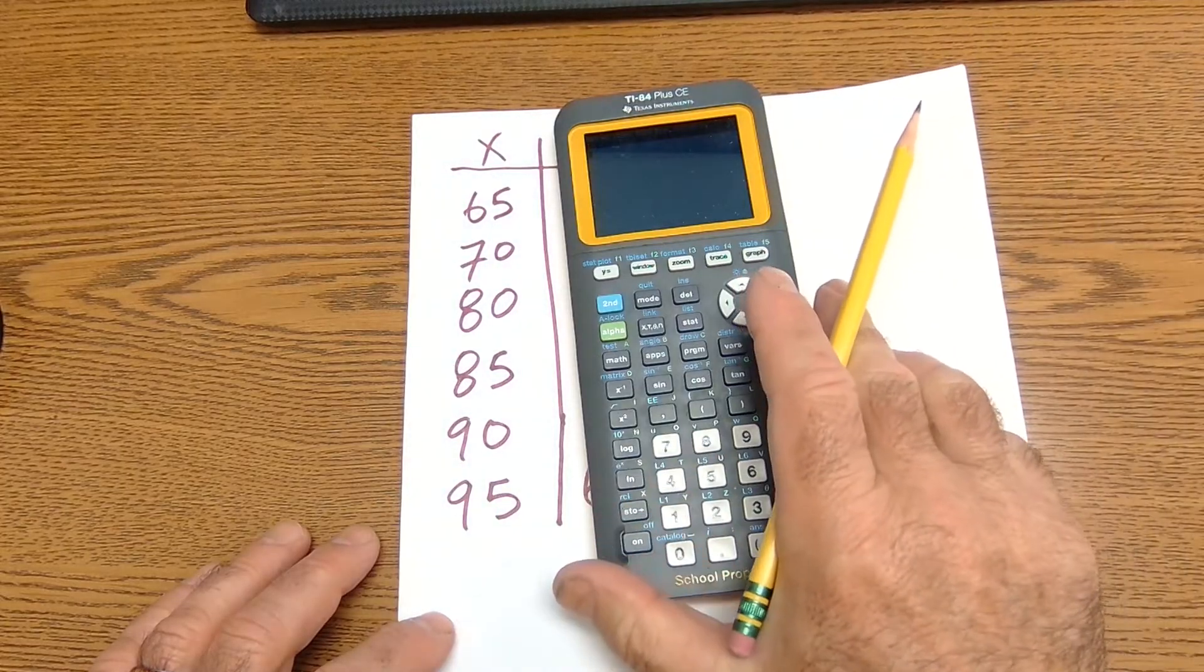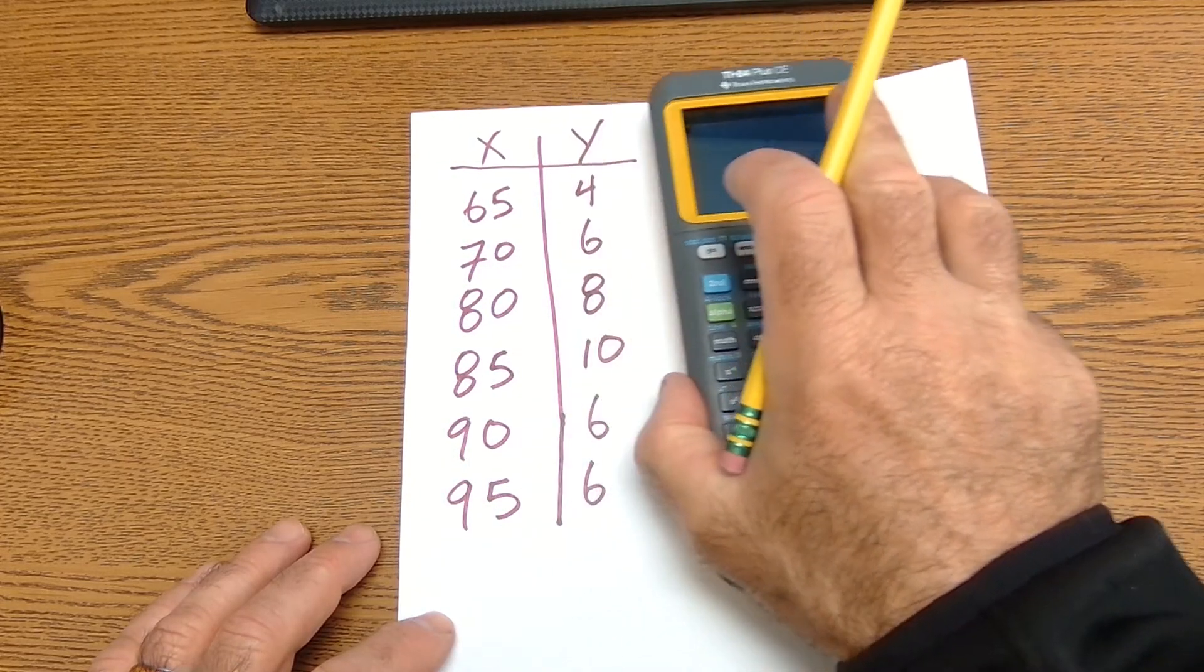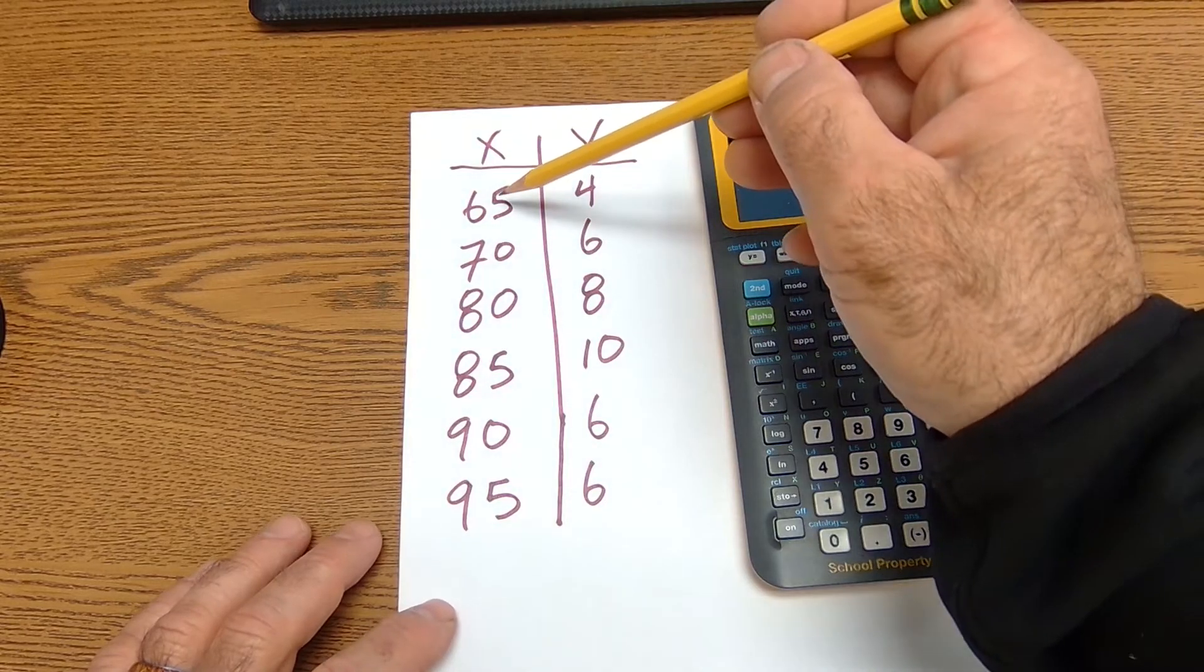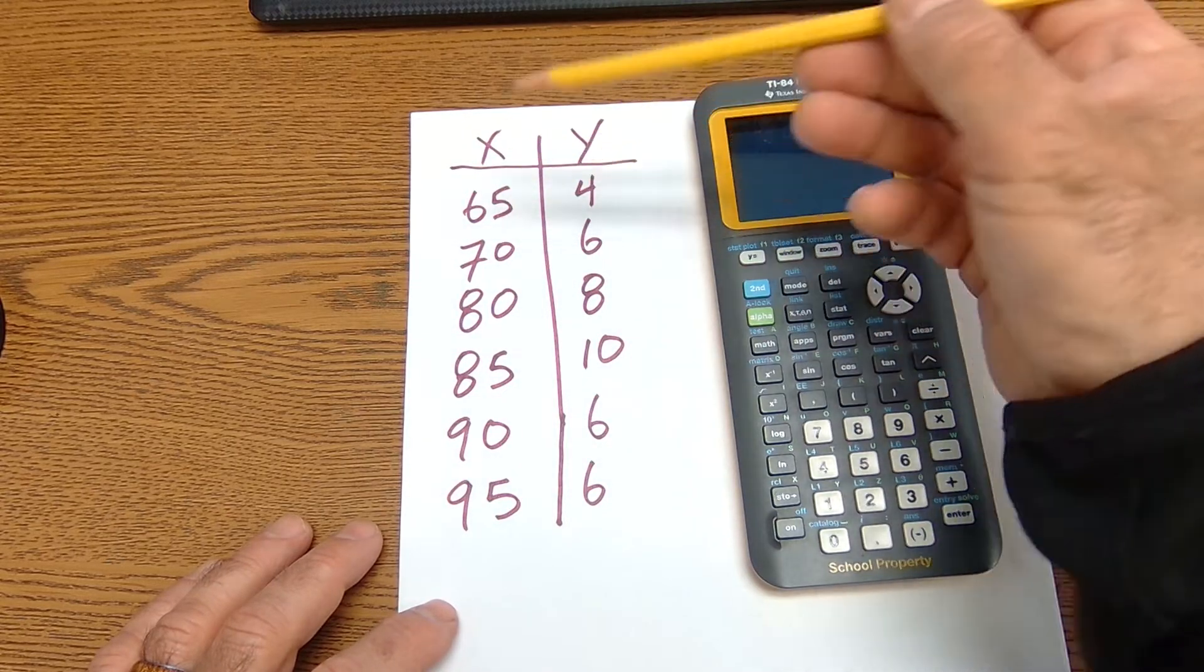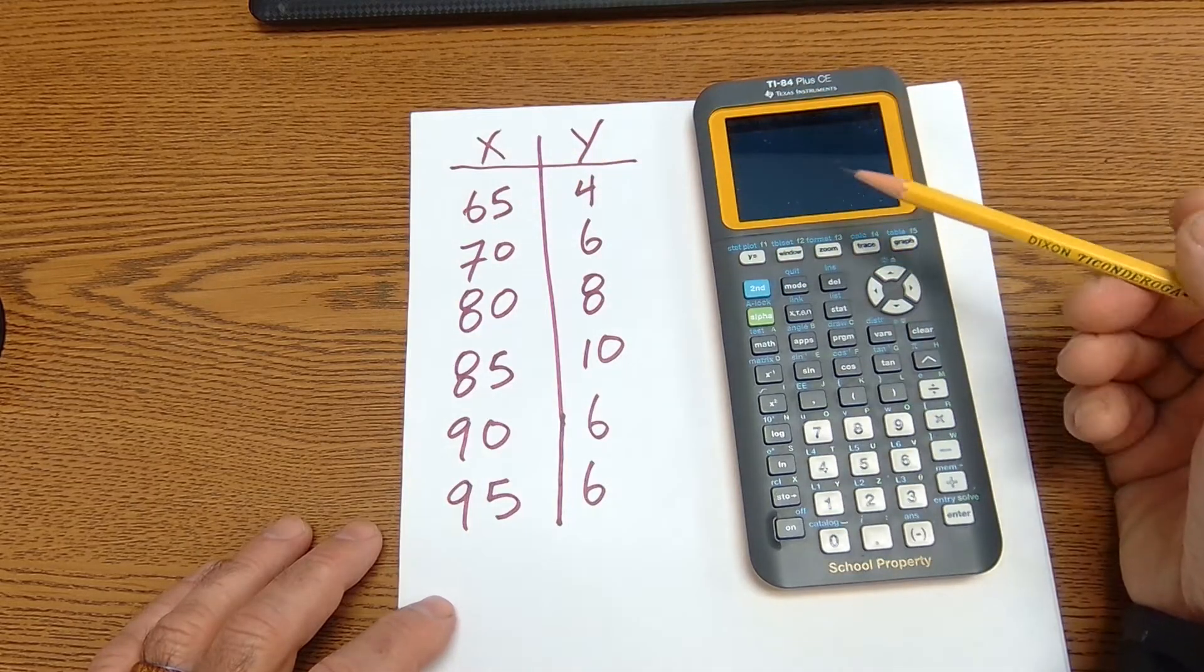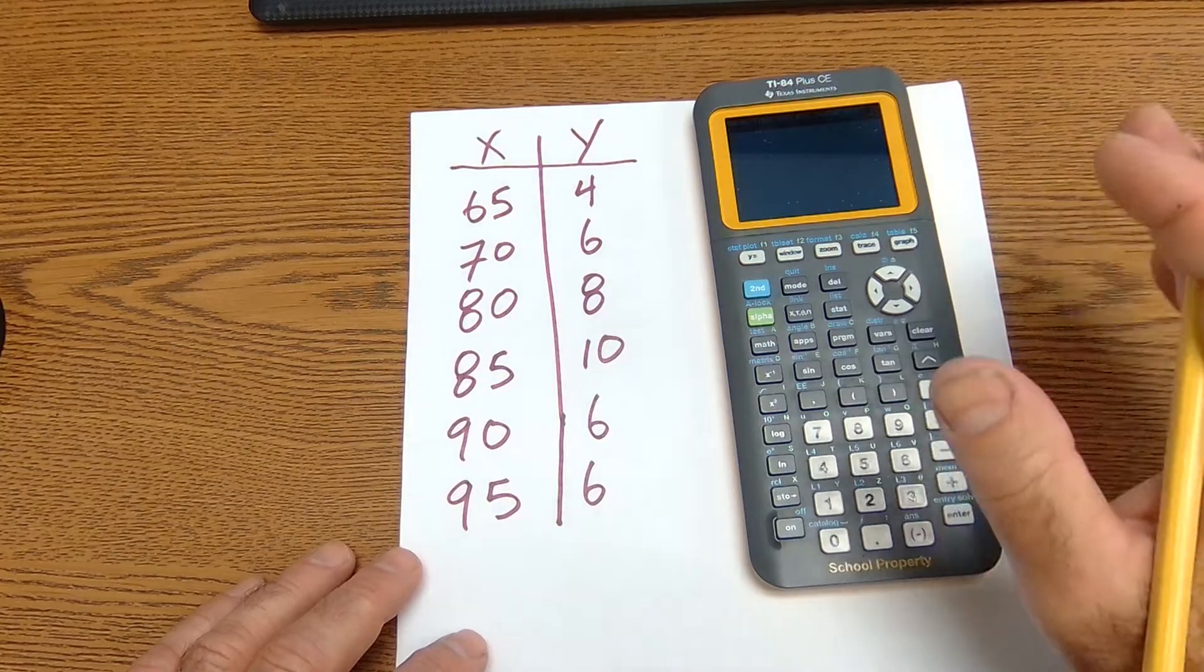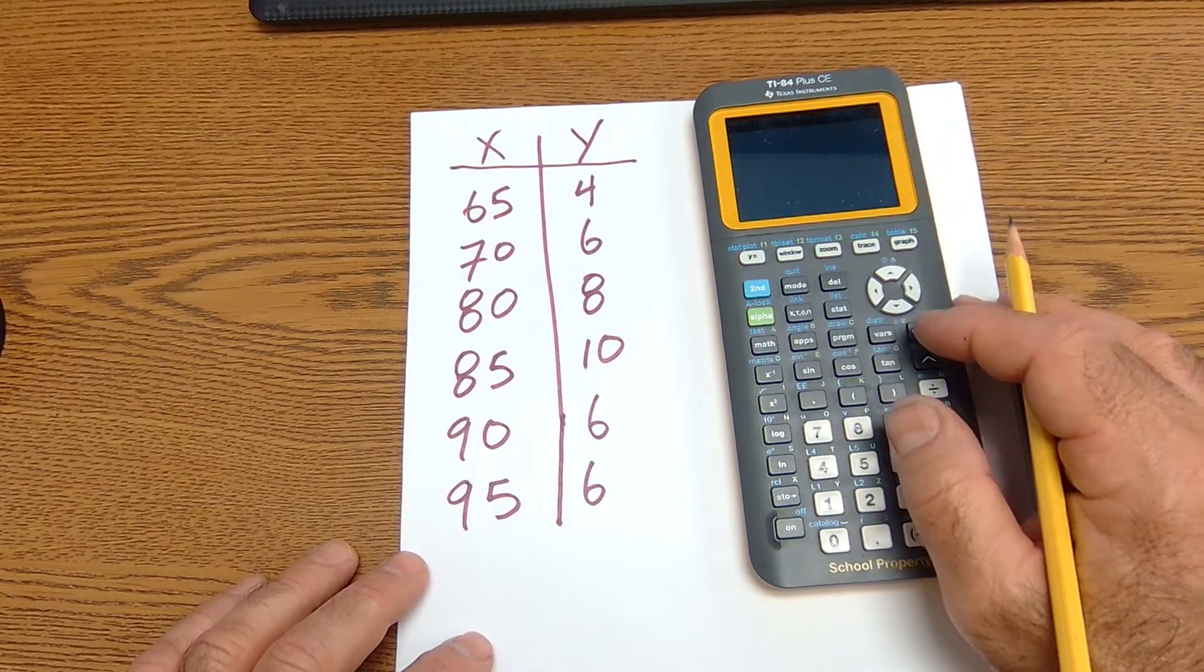And then the third style of stats that I'm going to do here is given two variables. Let's say this is test scores and hours spent studying or something like that. We've got two variables that depend on each other, and then we're going to run a regression on that, all with the TI-84 calculator.